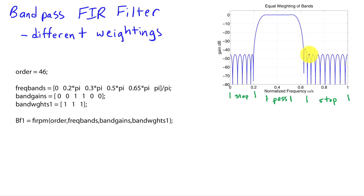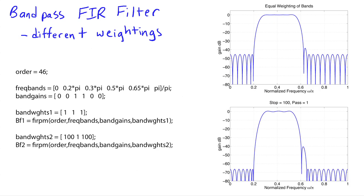Here's the response that we obtain with equal weighting. We see that in the stop band we're down about 45 dB, and there is still a little bit of ripple in the pass band. So let's change the weightings. In the second case, I'm going to weight the two stop bands by a factor of 100 relative to the pass band, and that should drop the side lobe levels in the stop bands. Indeed, you see that the ripple is quite a bit lower — about 20 dB lower in this particular example — and as a consequence, we have greater ripple in the pass band.